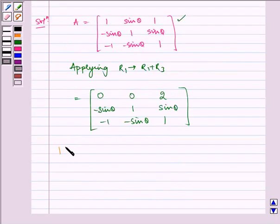Now the value of determinant A, that is Det(A), is 2 multiplied by—now expanding through this, eliminating this column in row—we get sin²θ + 1.